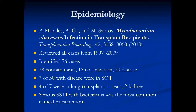A more recent review from 2010, likely from Spain, reviewed cases from 1997 to 2009. They found 76 cases and using IDSA criteria determined that 30 of 76 represented actual disease. Only seven were in organ transplant recipients; the others were in non-immunosuppressed patients. Of those seven transplant cases, most — four out of seven — were in lung transplant, and clinically they presented as serious skin and soft tissue infections with dissemination.